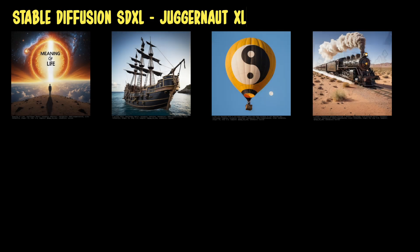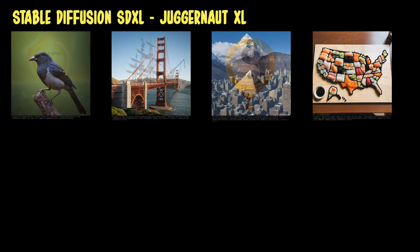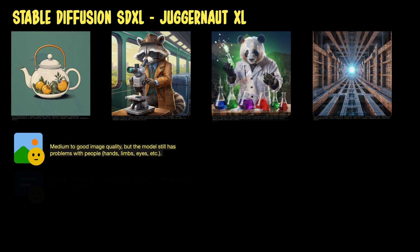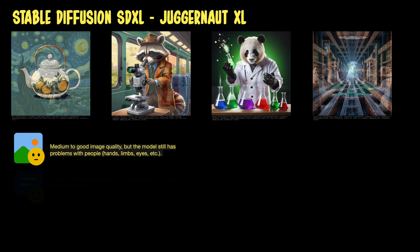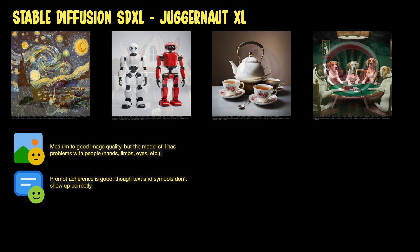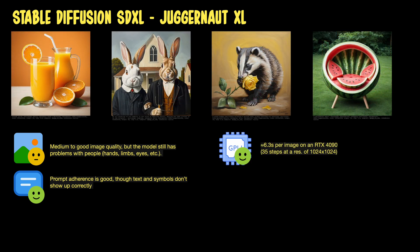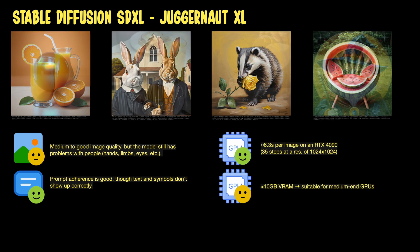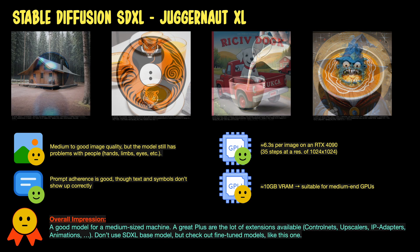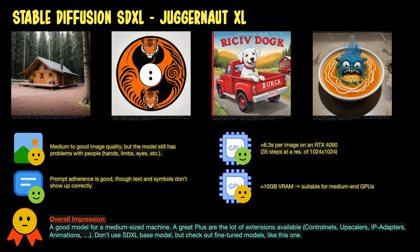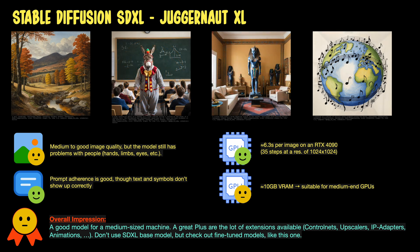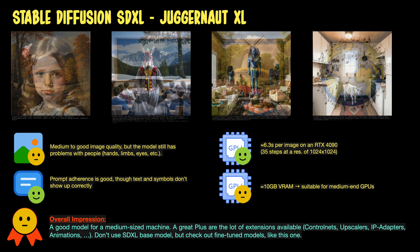Next we have Juggernaut XL, the fine-tuned SDXL version. The image quality is substantially better than on the SD 1.5 model, but it still has the finger problems with people. The prompt adherence is good, though it still can't render text or symbols. It takes roughly 6 seconds to render an image with about 10GB of VRAM required, so it's a good model for a medium-sized machine. Like all SD 1.5 and SDXL models, it has a great variety of extensions available like ControlNets, IP adapters, upscalers, animation controllers, and many more. I still like this model.